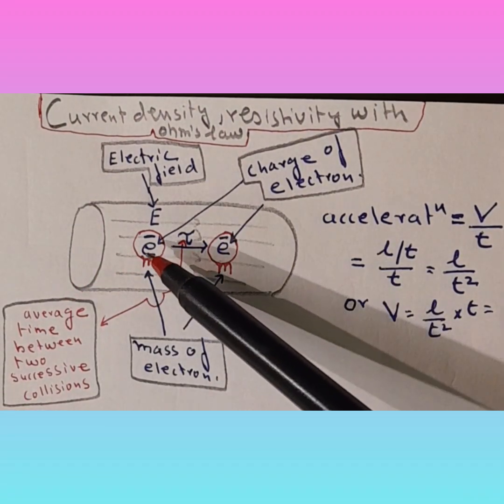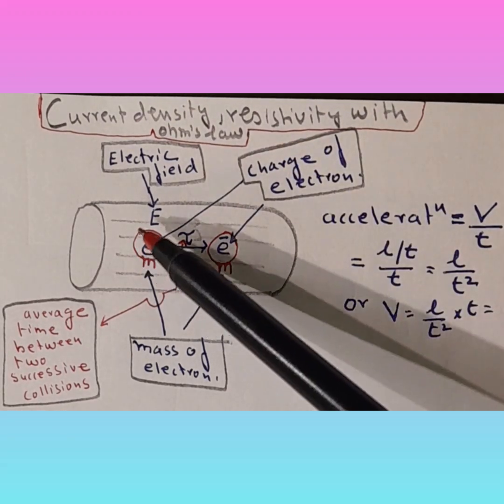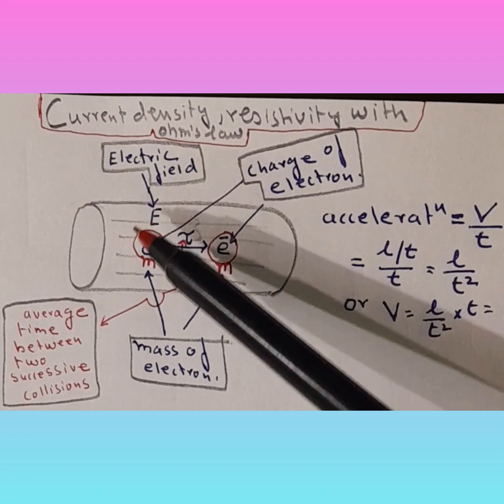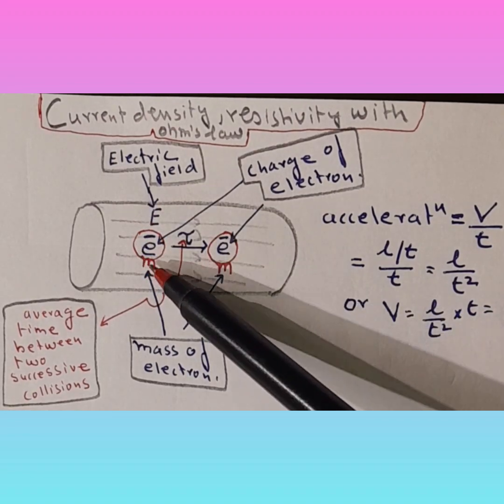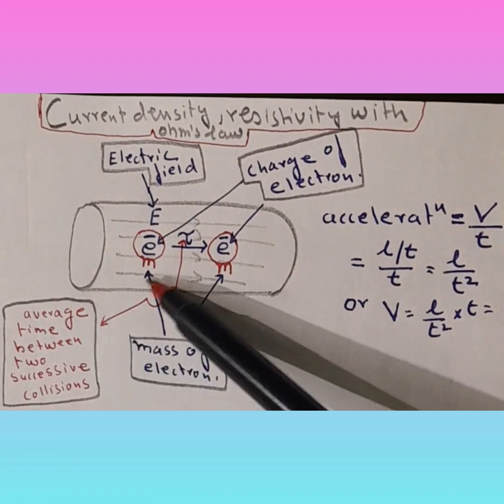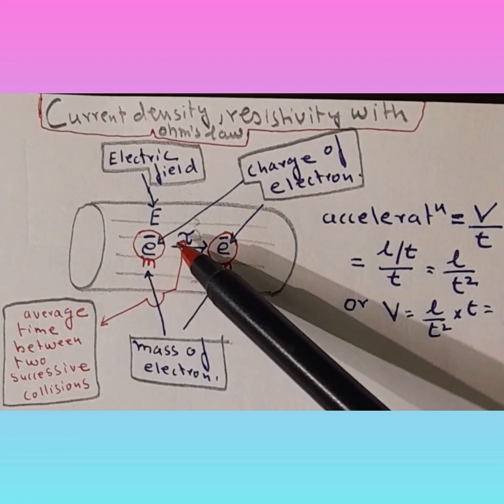These electrons have charge e and are moving in electric field intensity capital E, and the electrons have mass small m. The average time between two successive collisions is tau.